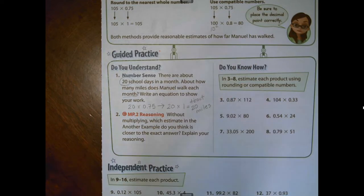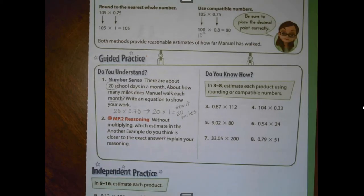That is not the absolute correct way or the only way to estimate this problem. Remember, our estimates are just an about answer that we're going to use so that when we actually multiply, we can see if our product is reasonable. So when we actually learn how to multiply a whole number and a decimal, we will see if our product is close to 20. If it's close to 20, our answer is reasonable. Let's jump over to three through eight and let's estimate the products. We can use rounding or we can use compatible numbers.